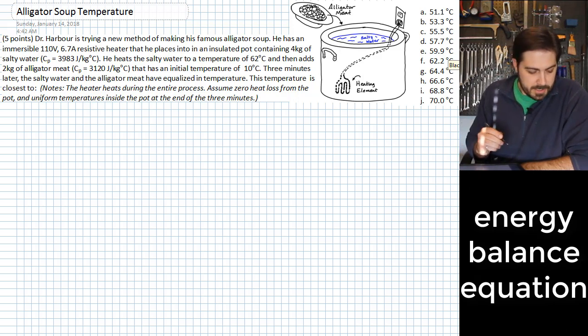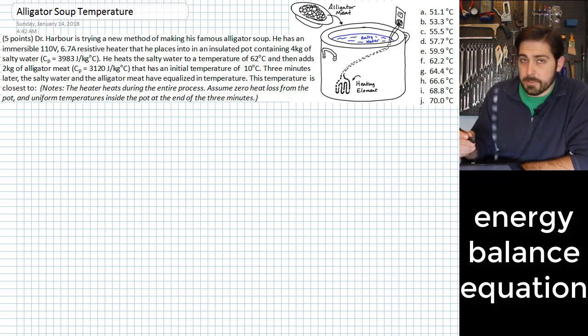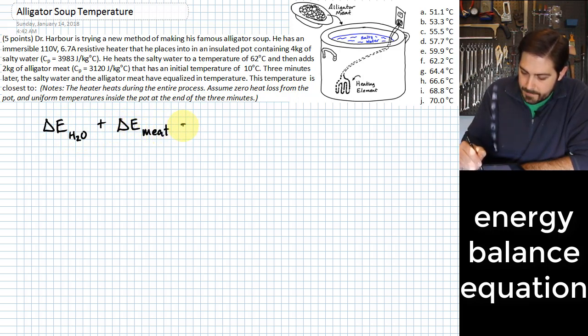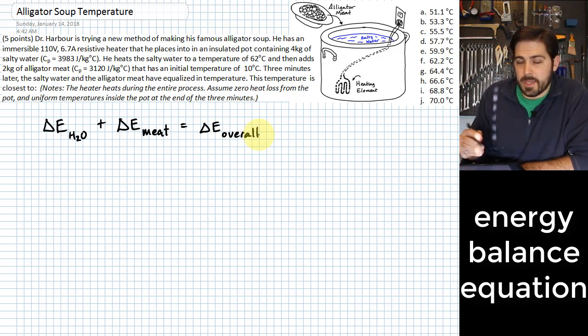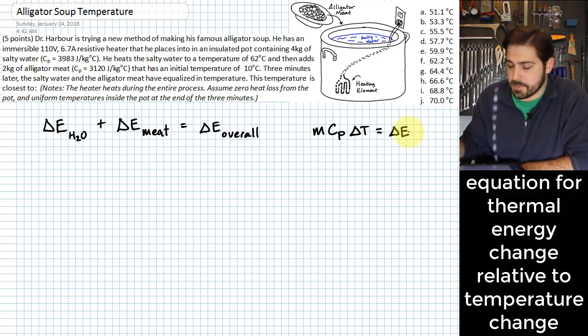Basically what we have as far as this equation goes is that the amount of energy change in the water plus the amount of energy change in the alligator meat is equal to the amount of change of energy overall that we can know because we know what the electric heat is doing. When we have a change in thermal energy, if we know the mass and we know the specific heat and we know the change in temperature, this allows us to calculate a change in the thermal energy.